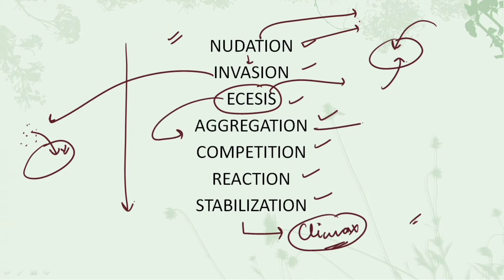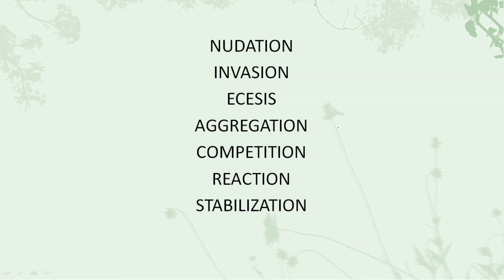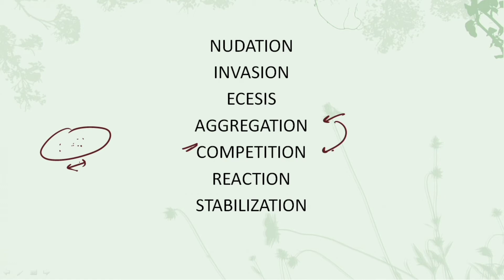After ecesis, the fourth step is aggregation. As numbers start to develop and increase, aggregation begins. The fifth step after aggregation is competition. If the number of species in an area increases, competition occurs. The species or propagules that arrived compete with each other for resources.